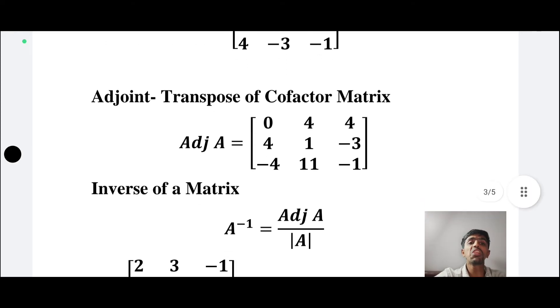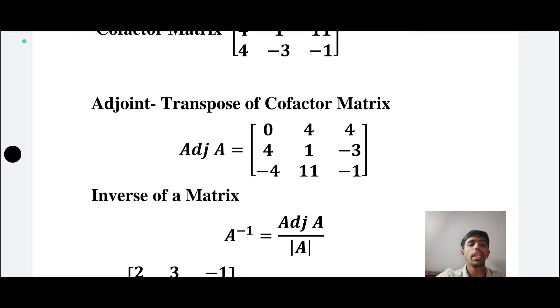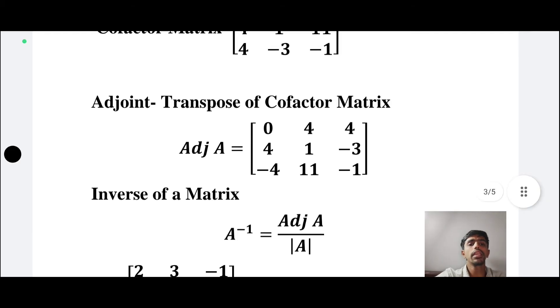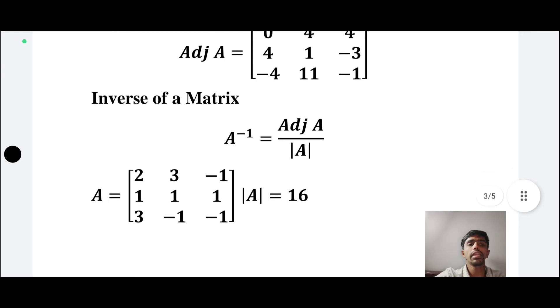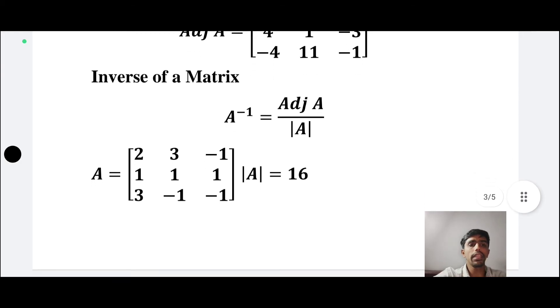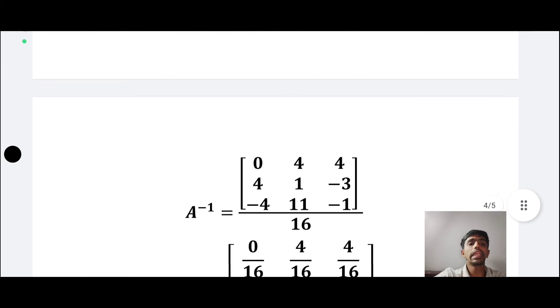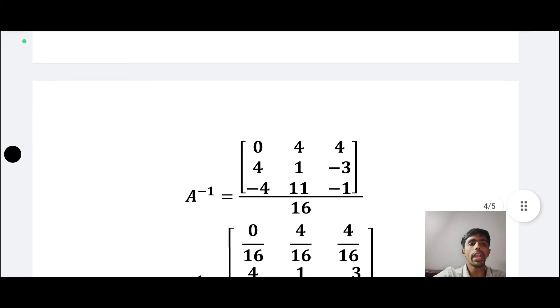The adjoint divided by the determinant. The determinant of A is 16.